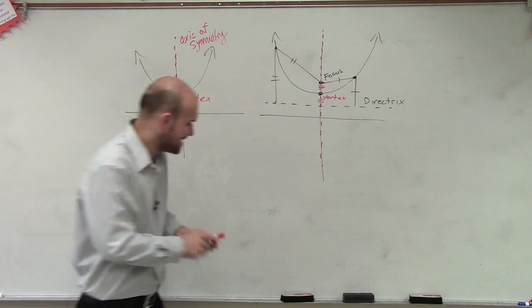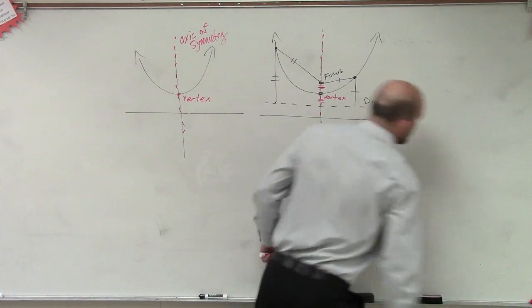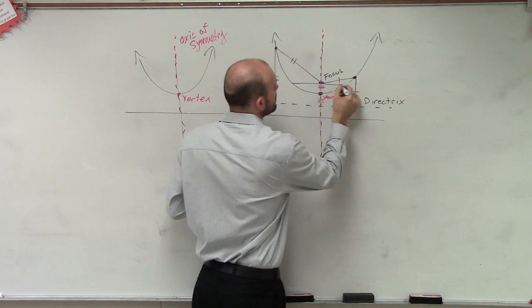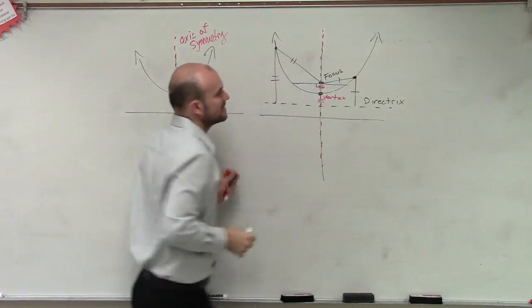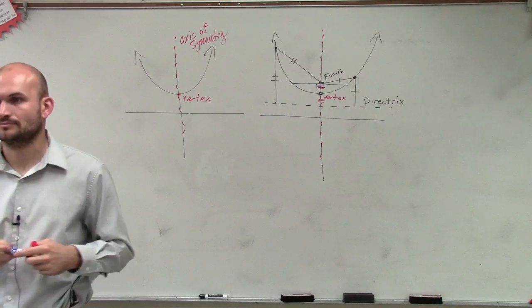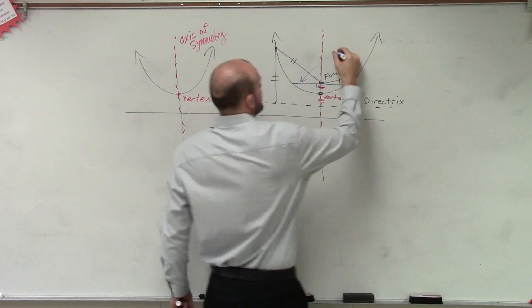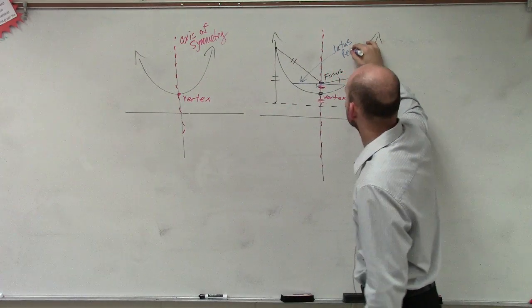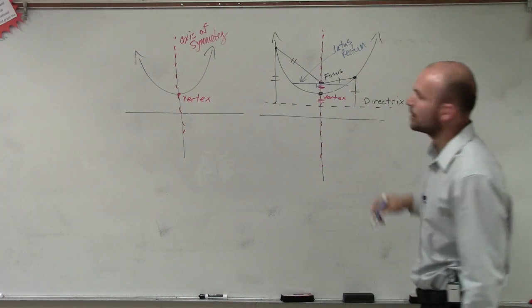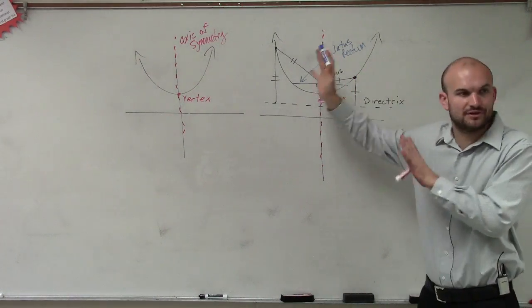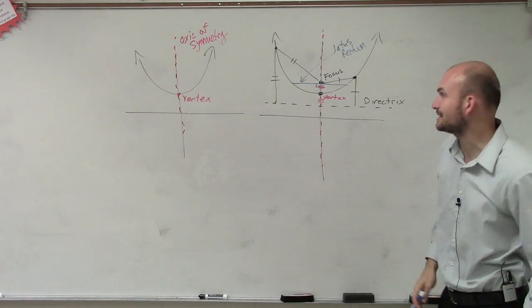The last definition I'm going to do, which is going to help us graph, is going to be this blue line right here. The blue line is what we're going to call a latus rectum. And what the latus rectum, we're going to go, I'm going to show you guys how to figure these out, and what the values are, and everything like that later.